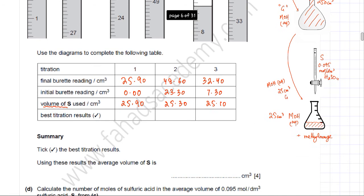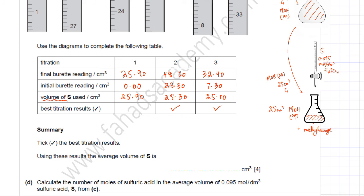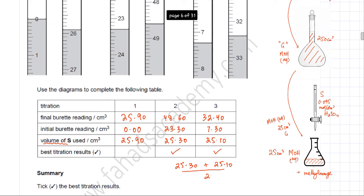To find the best titration results, we select values that are close together, indicating consistency. The first value of 25.90 cm³ is slightly anomalous, so we select titrations 2 and 3 (25.30 and 25.10 cm³). The average volume of S is (25.30 + 25.10) ÷ 2 = 25.20 cm³.